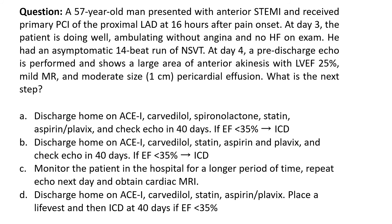Next question. A 57-year-old man presented with anterior STEMI and received primary PCI of the proximal LAD at 16 hours after pain onset. At day 3, the patient is doing well, ambulating without angina and no heart failure. He had an asymptomatic 14-beat run of non-sustained VT. At day 4, a pre-discharge echo is performed and shows a large area of anterior akinesis with EF of 25%, mild mitral regurgitation, and a moderate-sized 1 cm pericardial effusion. What is the next step?